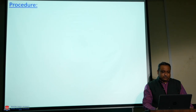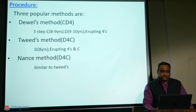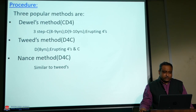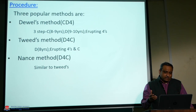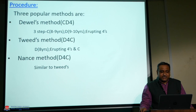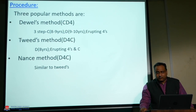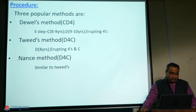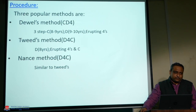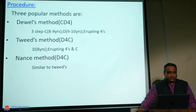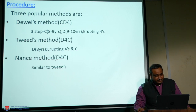There are three types of serial extraction procedures. The first is Devil's method (C-D-4), the second is Tweed's method (D-4-C), and the third is Nance's method (D-4-C), with differences between Tweed and Nance in the age at which D and 4 are extracted. In Devil's method, the first step is extraction of C (deciduous canine) at age 8–9 years, creating free space. Then D (deciduous first molar) is extracted at age 9–10 years.